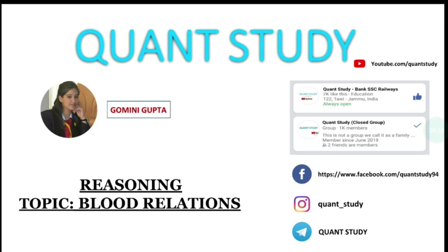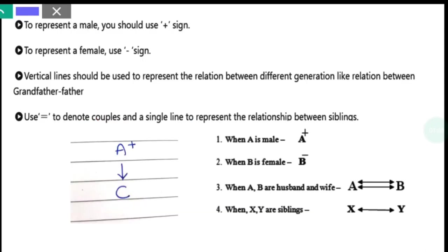As I have told you in lecture 1, blood relations questions usually make your family tree easily. Let's quickly revise the notations. The first thing was that if you want to represent a male member, you have to use a plus sign. Like here is a plus sign, which represents a male family member.